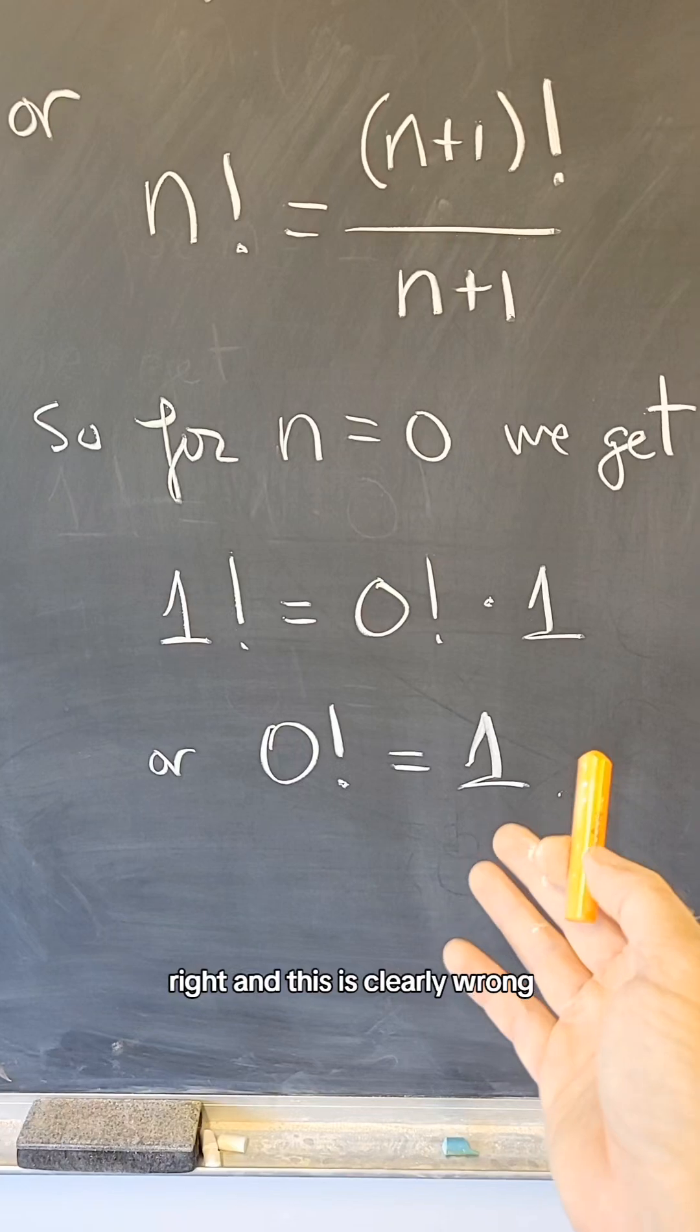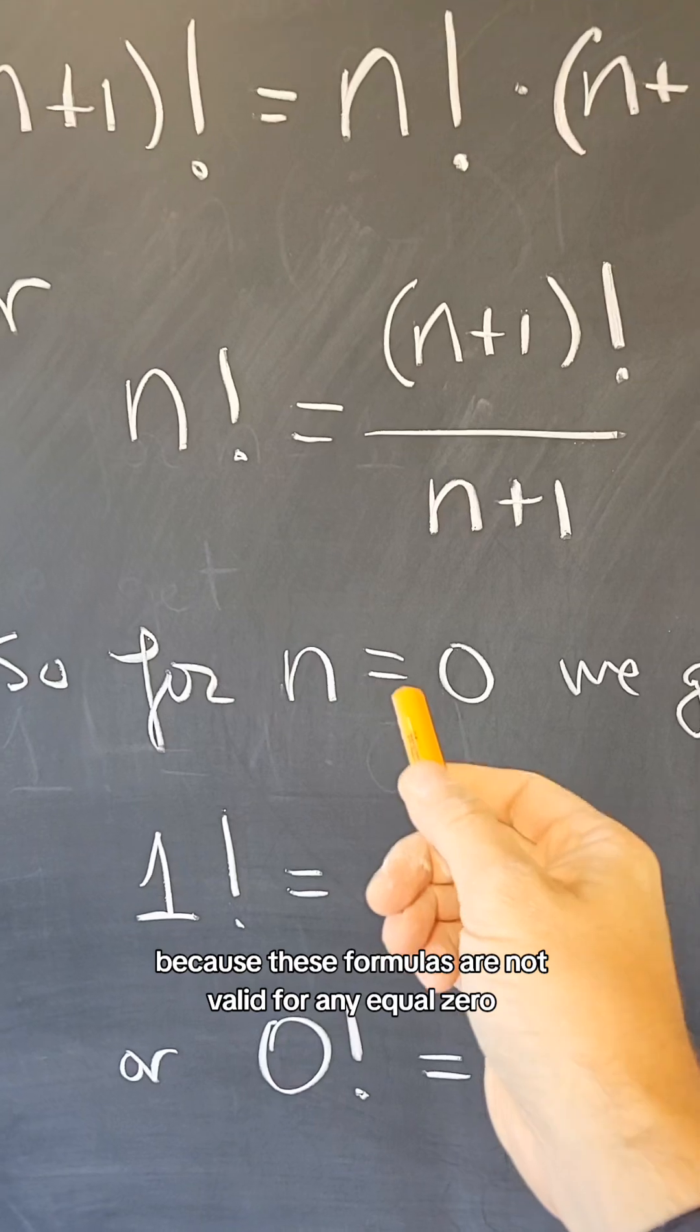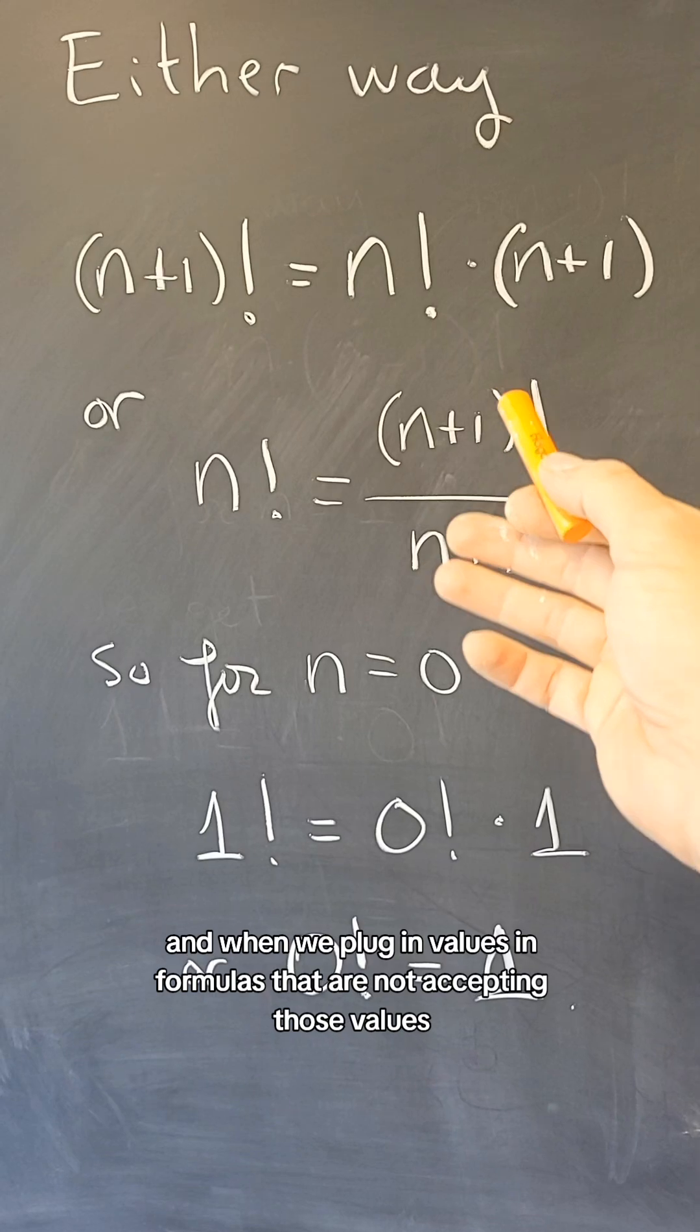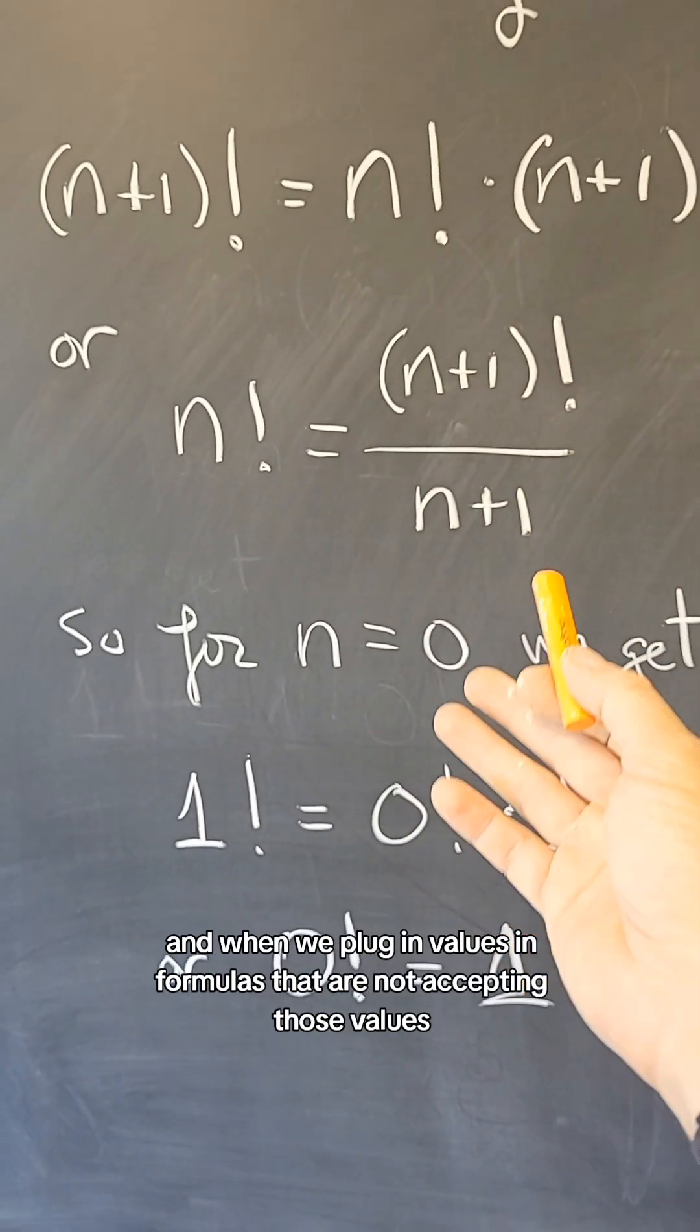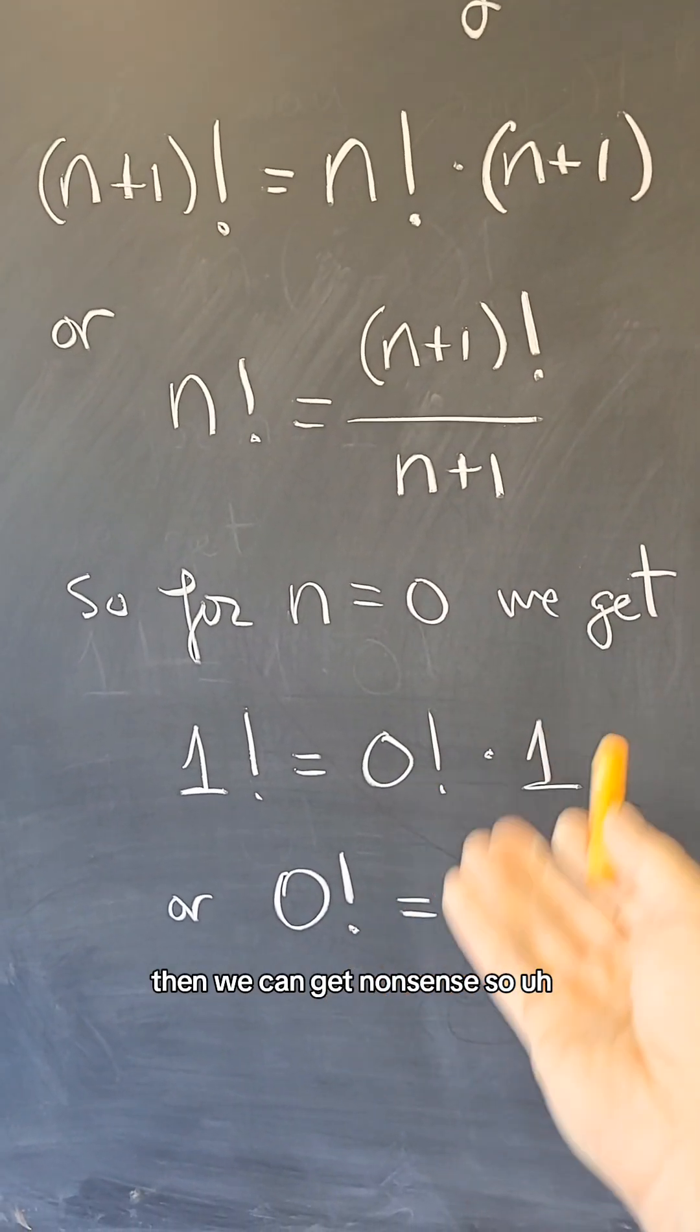And this is clearly wrong because these formulas are not valid for n equals 0. And when we plug in values in formulas that are not accepting those values where these formulas are not defined, then we can get nonsense.